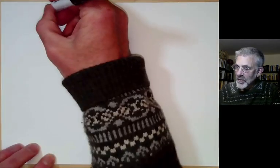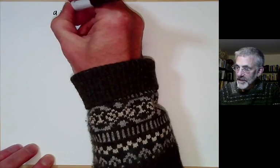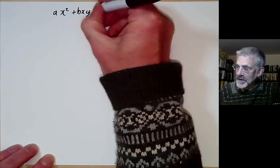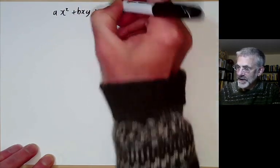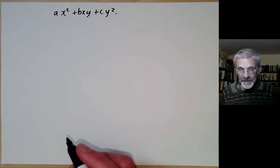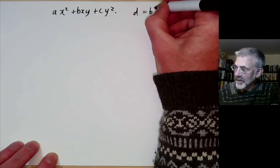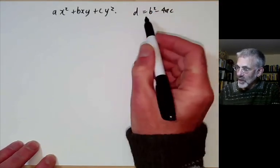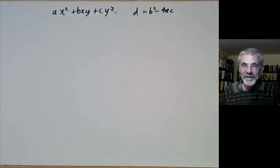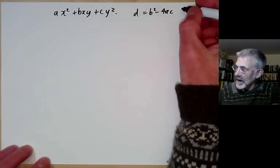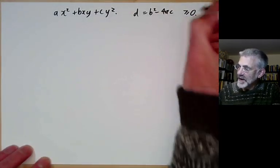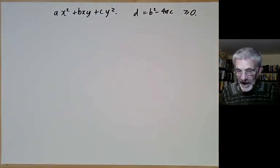This lecture is part of Berkeley Math 115, an introductory undergraduate course on number theory, and will be mostly about examples of indefinite binary quadratic forms ax² + bxy + cy². The last couple of lectures, we were looking at examples where the discriminant d = b² − 4ac was less than zero, where the form is either positive definite or negative definite. This time, we're going to be looking at the case when the discriminant d is at least zero, which are either indefinite or degenerate.